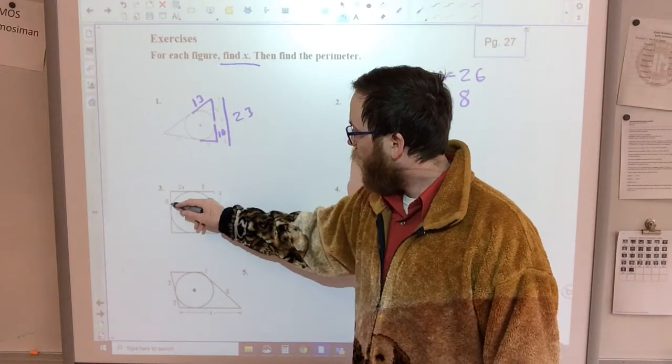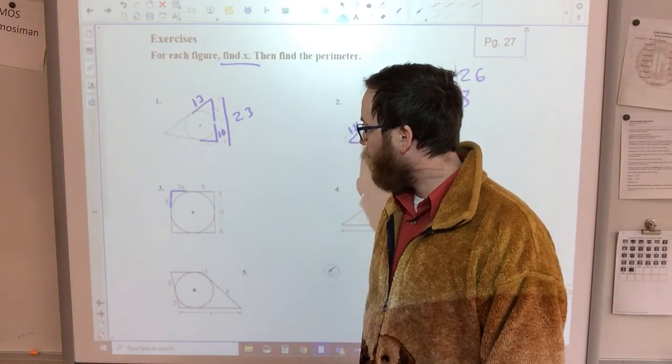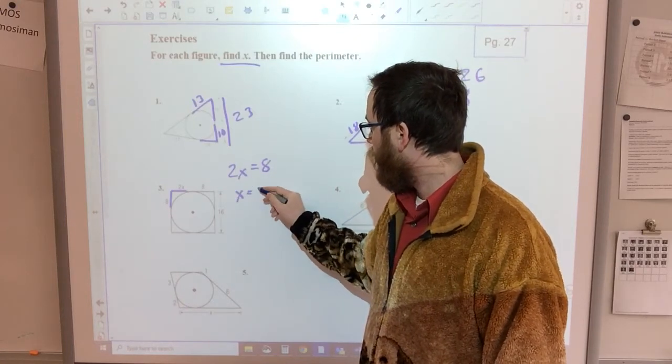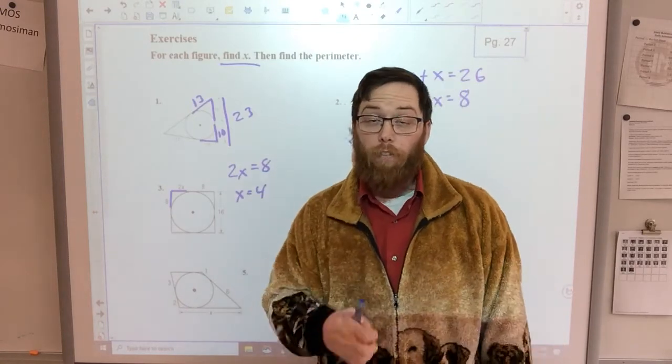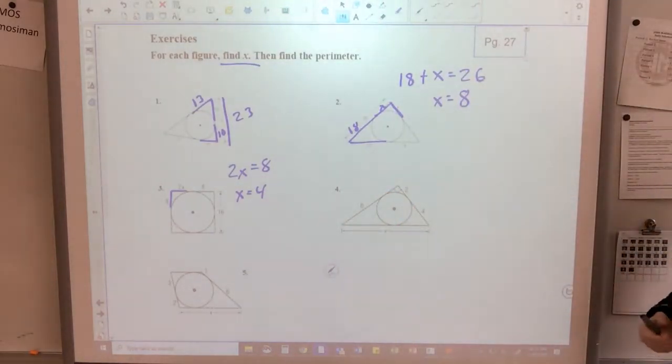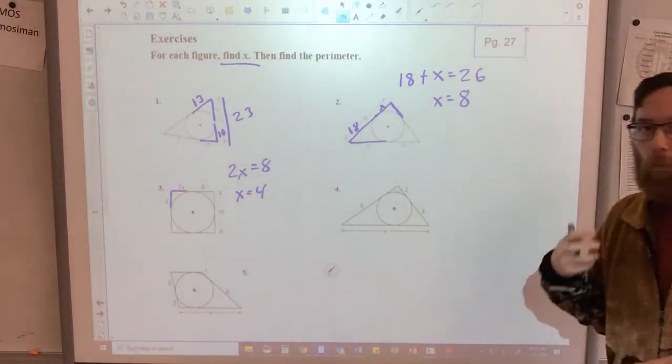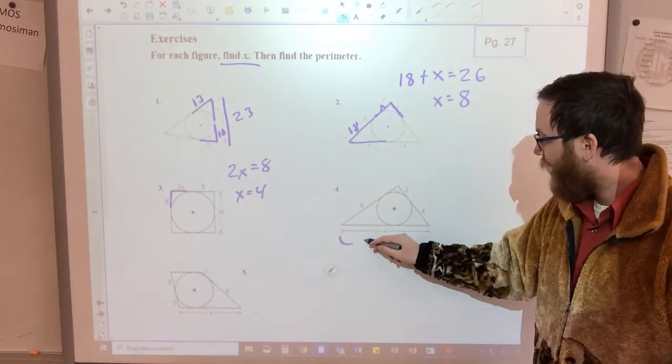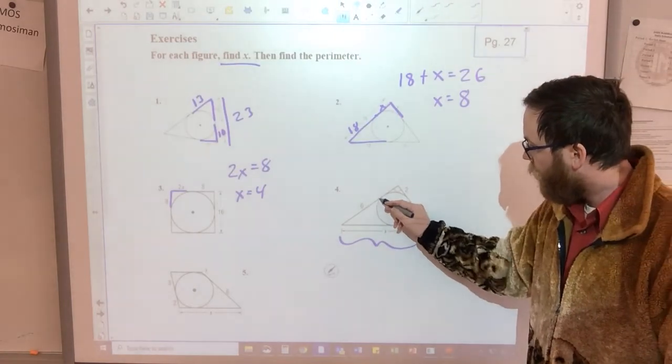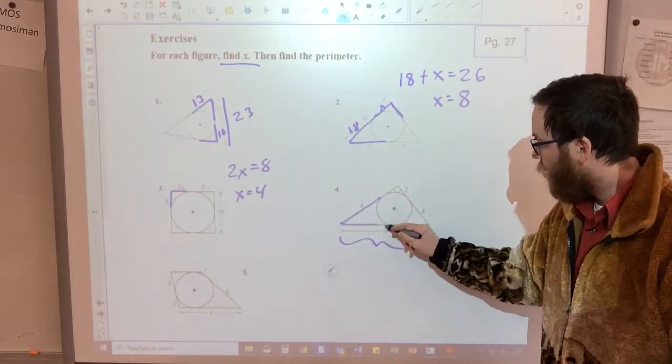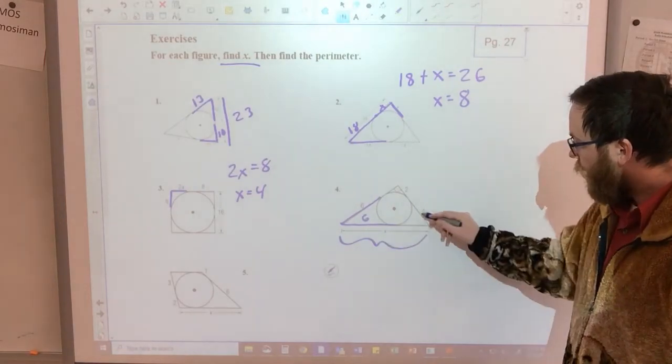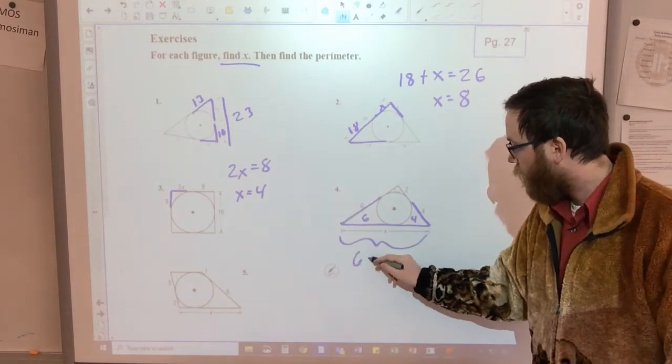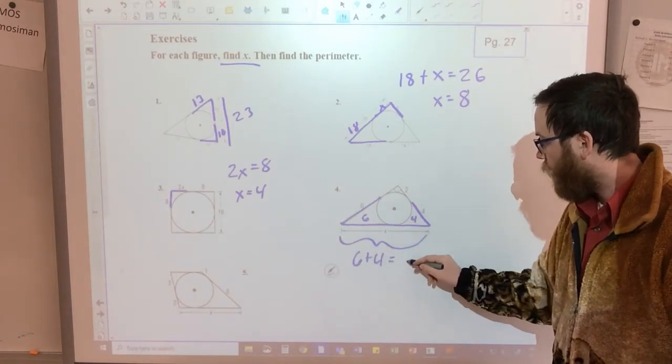Over here, 8 and 2x are the same two pieces. So 2x is equal to 8. x is equal to 4. A lot of these problems are going to revolve around knowing things or knowing when things are the same. Number 4, I want to find the entire side of this triangle. 6 is the same as this length, so that's 6. And 4 would be the same as this length, so that would be 4. 6 plus 4. So x would equal 10.